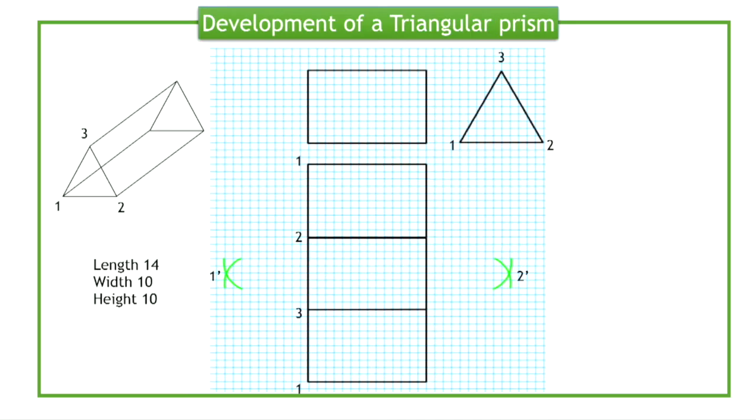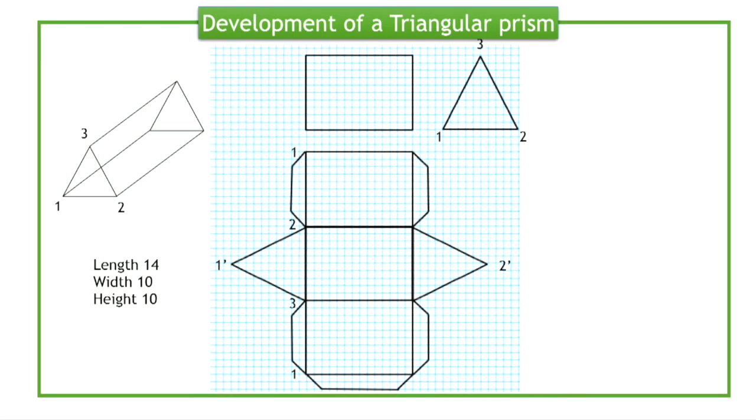Intersecting arcs are drawn from the points 2 and 3 on the development to get the corners of the triangular ends, labelled 1 dash and 2 dash. 1 dash and 2 dash are joined to the sides of the development to get the triangular ends.